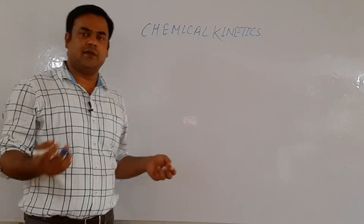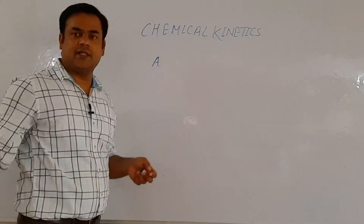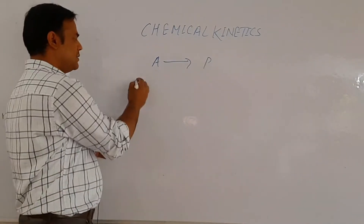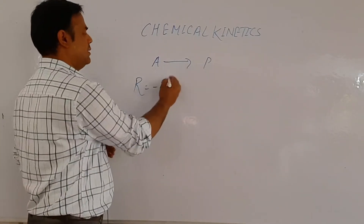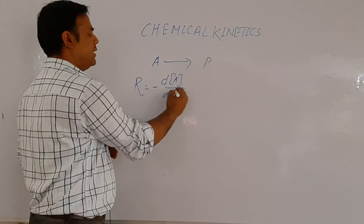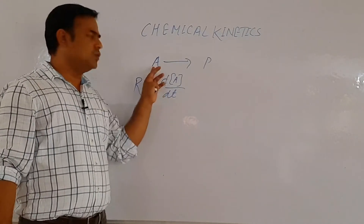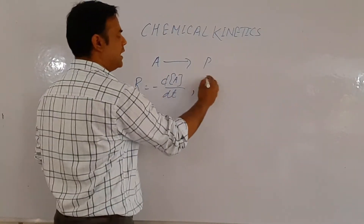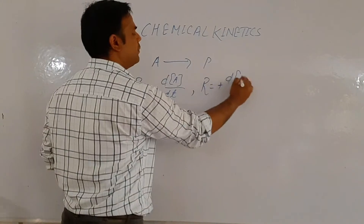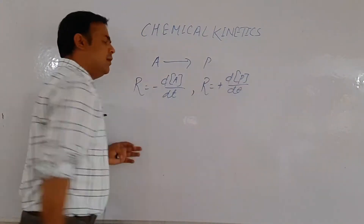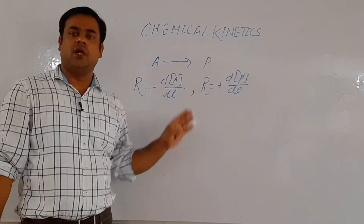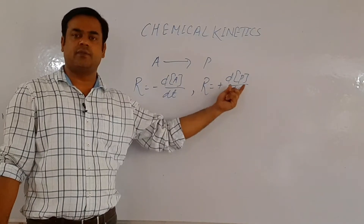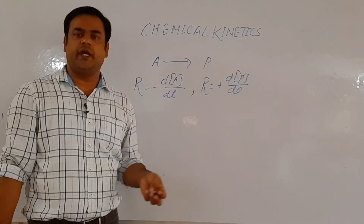First, whenever we express the rate of any chemical reaction in which reactant A converts into product P, rate is given as R equals to minus d[A]/dt. This is rate with respect to reactant A. Rate with respect to product is written as R equals to plus d[P]/dt. Rate equals change in concentration of reactant per unit time, as well as change in concentration of product per unit time — both give the rate of reaction.